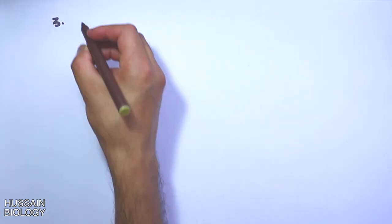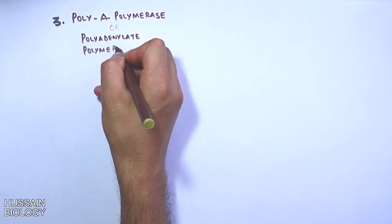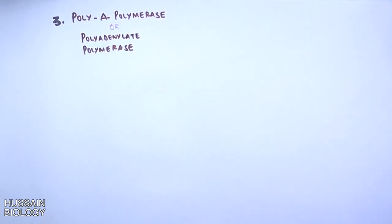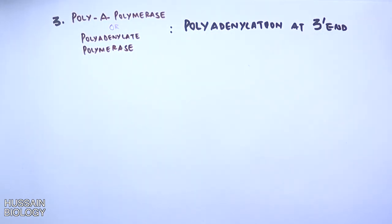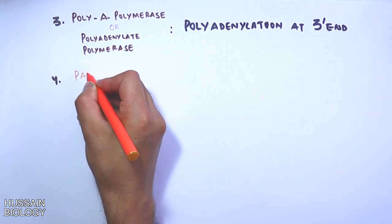The third important enzyme needed for the polyadenylation process is poly A polymerase, or polyadenylate polymerase. Poly A polymerase catalyzes the incorporation of adenine residues into the 3' end of the mRNA molecule, thus making the poly A tail of mRNA. This enzyme uses a single-stranded RNA molecule as a primer during poly A tailing.